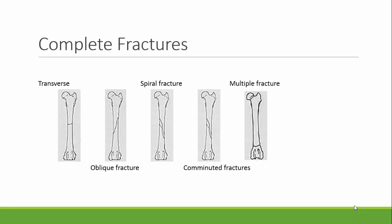Pictured here are five examples of complete fractures. Transverse is when it goes straight across on nearly one axis. An oblique fracture is when it is slanted, going across two axes. A spiral fracture would be an example of a torsional fracture, which may leave some nasty sharp edges in the bone. Also pictured are comminuted fractures as well as multiple fractures. A comminuted fracture results in splinters and broken pieces, while multiple fractures refers to there being more than one fracture in the bone.